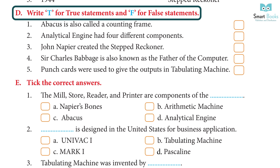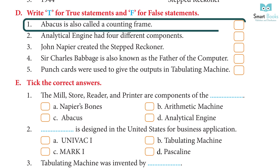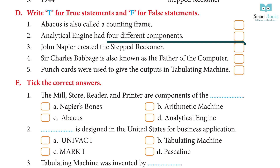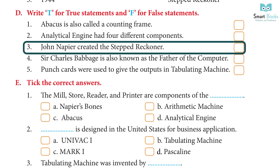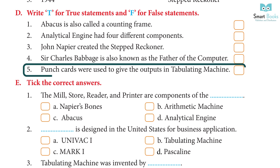Write T for True and F for False: 1. The Abacus is also called a Counting Frame. Answer: True. 2. The Analytical Engine had four different components. Answer: True. 3. John Napier created the Step Reckoner. Answer: False. 4. Sir Charles Babbage is also known as the Father of the Computer. Answer: True. 5. Punch Cards were used to give the outputs in the Tabulating Machine. Answer: False.